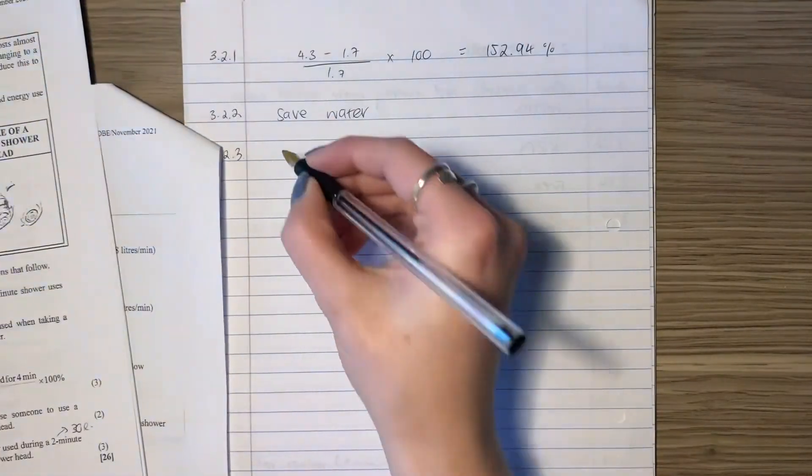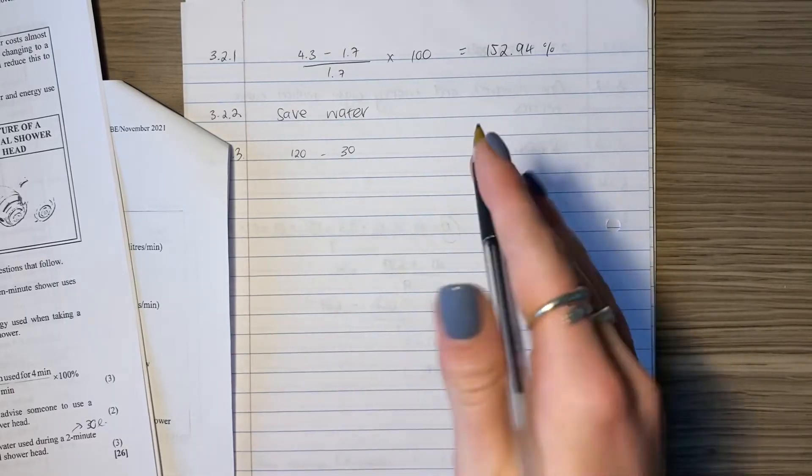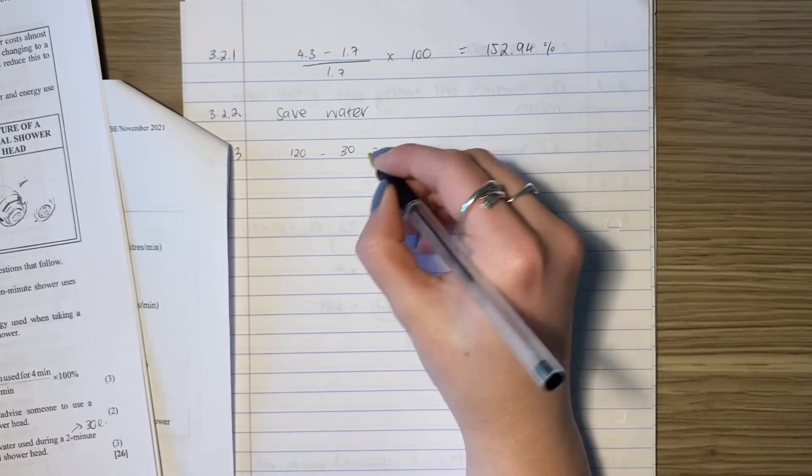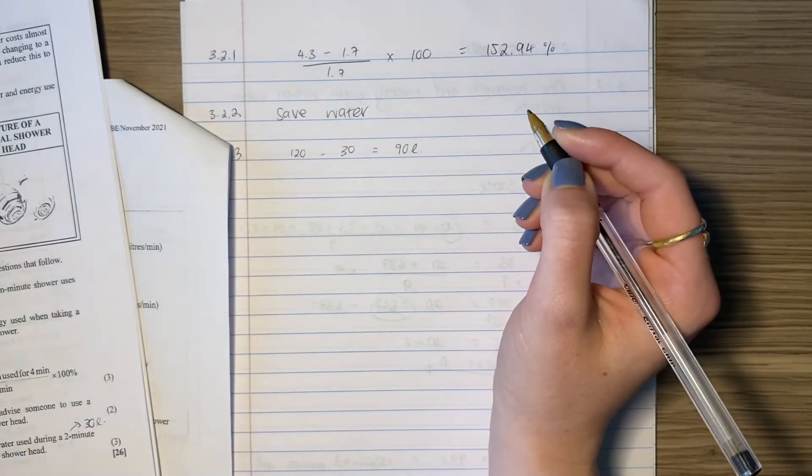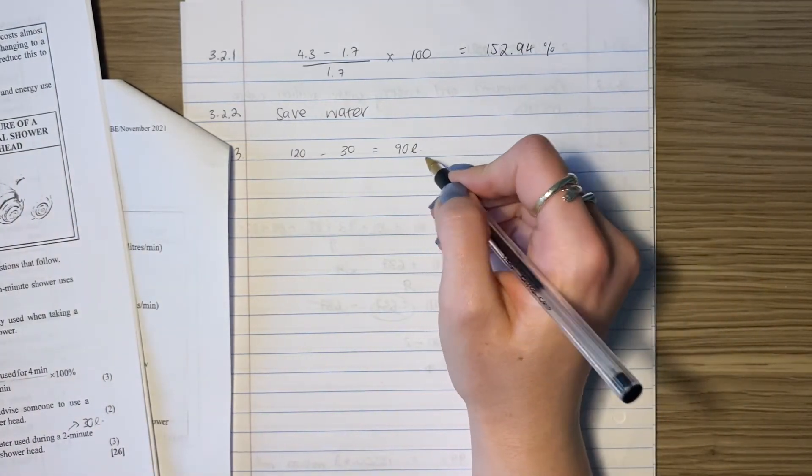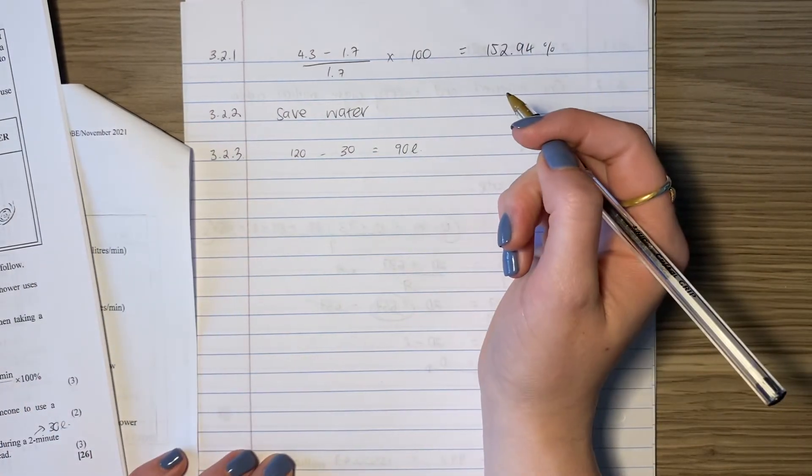So it says, what's the range? So you're going to say 120 minus 30, because remember that we say the max minus the min. Don't say 30 minus 120, that'd be not right. So the range is going to be 90 liters. Please be very careful to put in your units. Remember you can get penalized not using your units. That's all done.